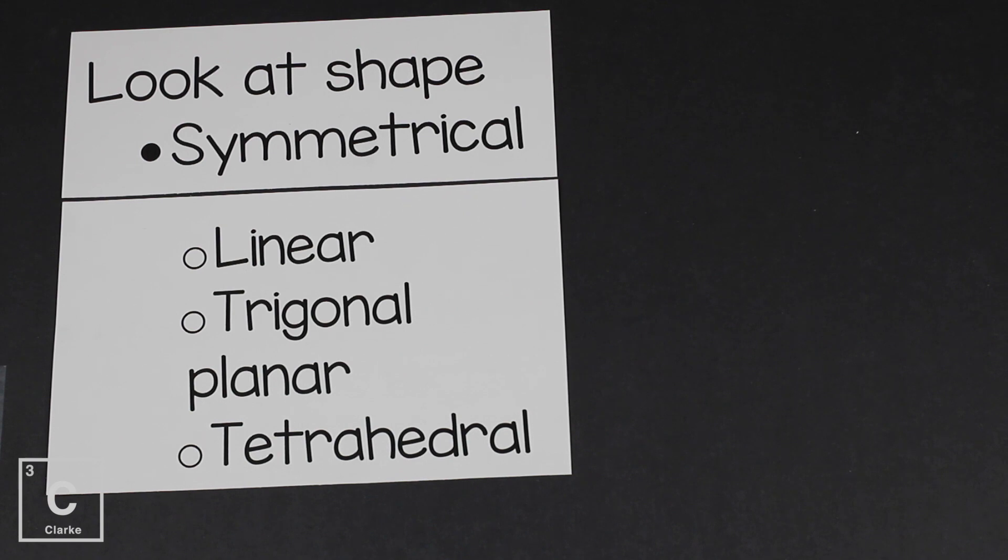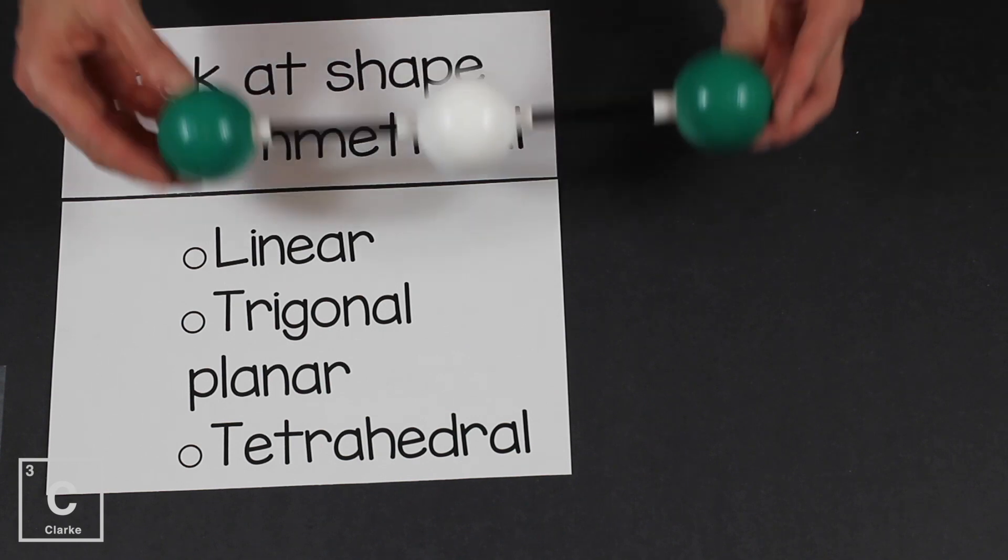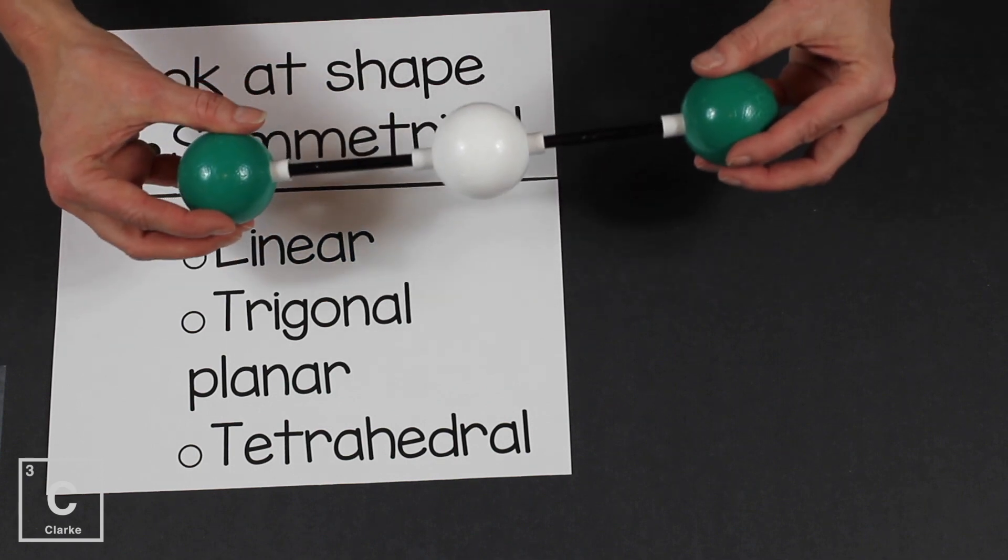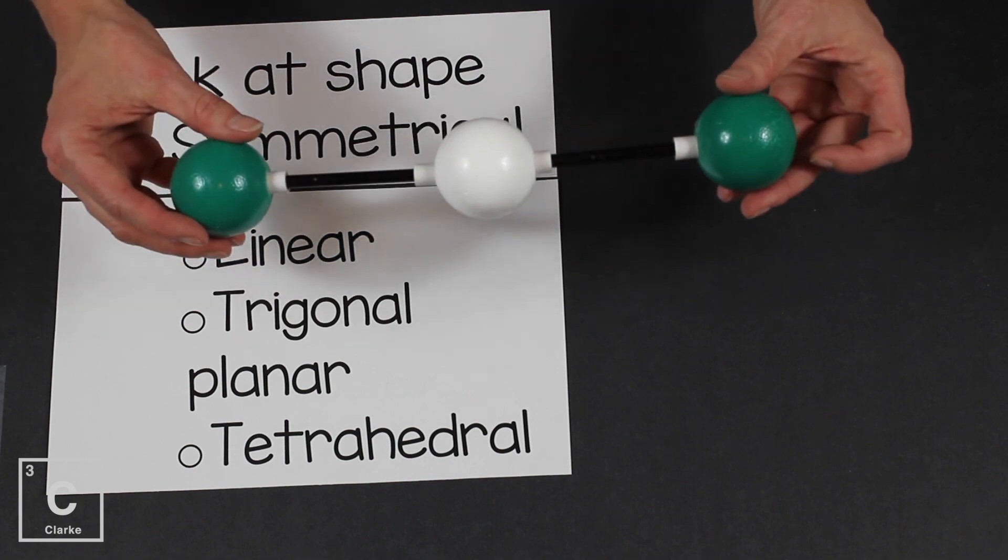Now when I say symmetrical, I don't necessarily mean that you could draw a middle line and fold it on itself. I mean like if you're playing tug-of-war with somebody and you each have a rope and you're the exact same strength and you're never going to win, that's symmetrical. Let's look at these shapes and see how they have symmetry, linear. If this person and this person had the exact same strength and they were pulling, no one's ever going to win, symmetrical.